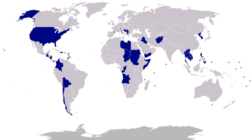1903, Honduras, March 23 to 30 or 31: U.S. forces protected the American consulate and the steamship wharf at Puerto Cortés during a period of revolutionary activity. 1903, Dominican Republic, March 30 to April 21: a detachment of marines was landed to protect American interests in the city of Santo Domingo during a revolutionary outbreak. 1903, Syria, September 7 to 12: U.S. forces protected the American consulate in Beirut when a local Muslim uprising was feared.